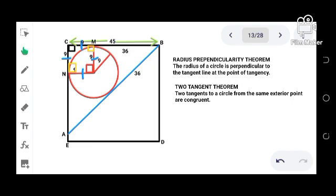But we do not have the measure of AN, so let's just label it as x. And since again by the two tangent theorem, this part here and this one are equal, so this is x as well. Now as you can see, AC is now composed of two segments.